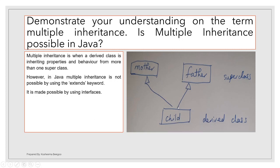To understand multiple inheritance conceptually: a child can inherit properties from both the mother and the father. For example, physical features may be inherited from the father, and certain skills from the mother. When a class inherits from both, that is an example of multiple inheritance.